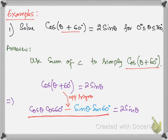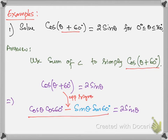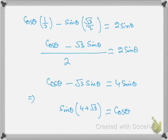Example 1: Solve the equation cos(θ + 60°) = 2sinθ. To solve this equation, we need to simplify the angle of cosine, so we use the sum of angle formula to expand cos(θ + 60°). This becomes cos θ times cos 60° minus sine θ times sine 60°. The sign is opposite, as per the cosine formula. The value of cos 60° is 1/2 and the value of sine 60° is √3/2.